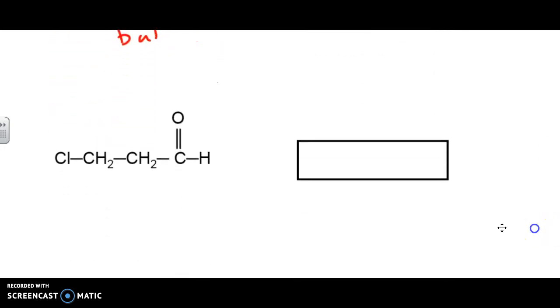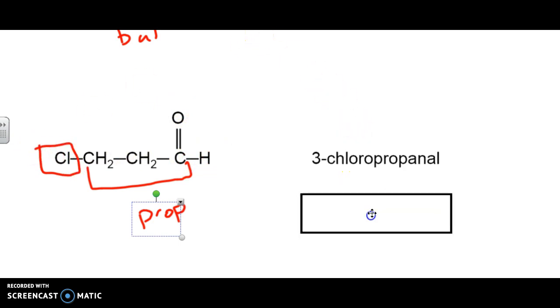If we look at our next example right here, very similar. We've got a three-carbon chain, so therefore it's going to be a prop. And by definition, this is always on the end, so this is spot one. At spot three, we've got a chloro. Therefore, the name of this compound is going to be 3-chloropropanal.